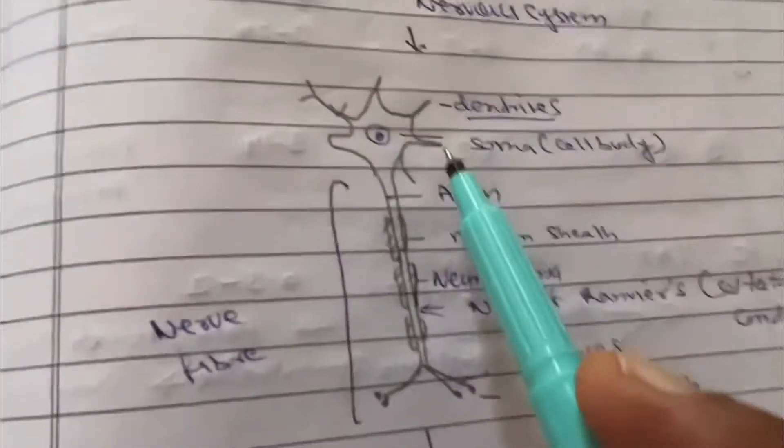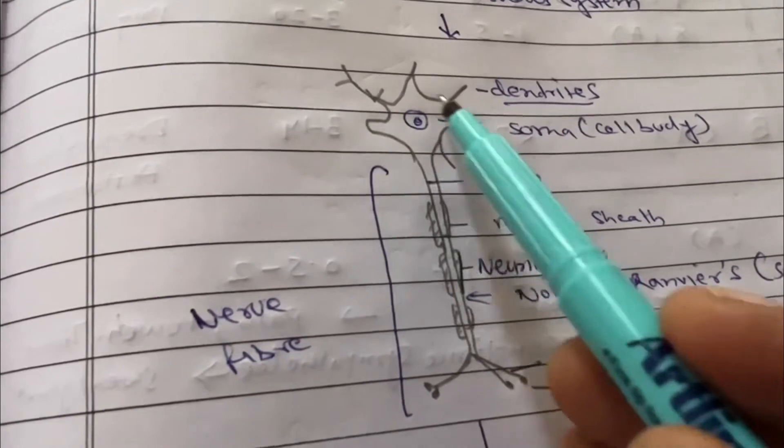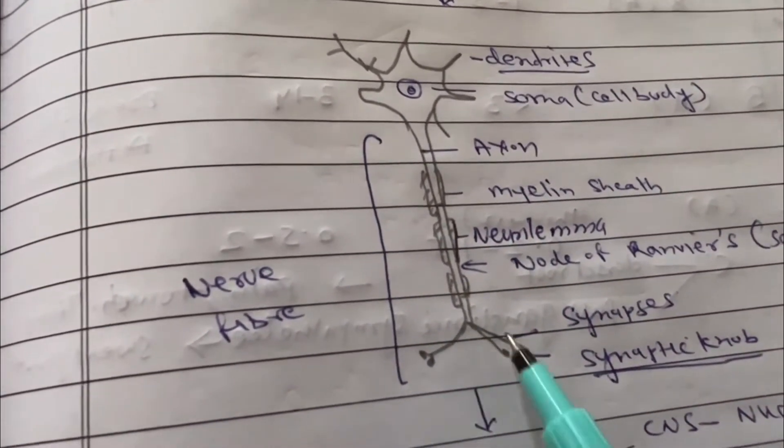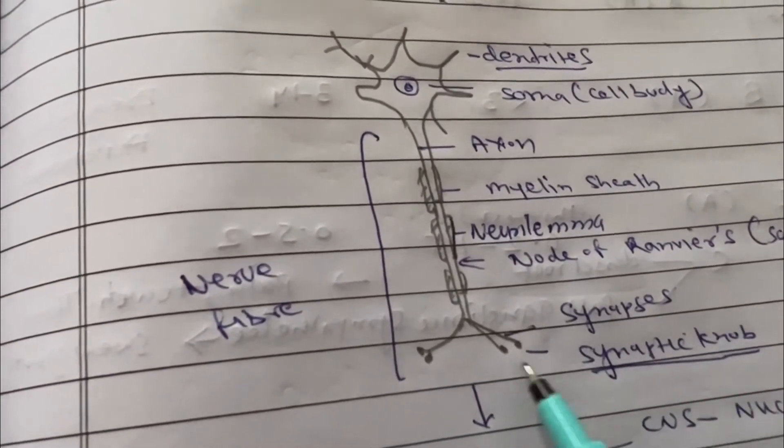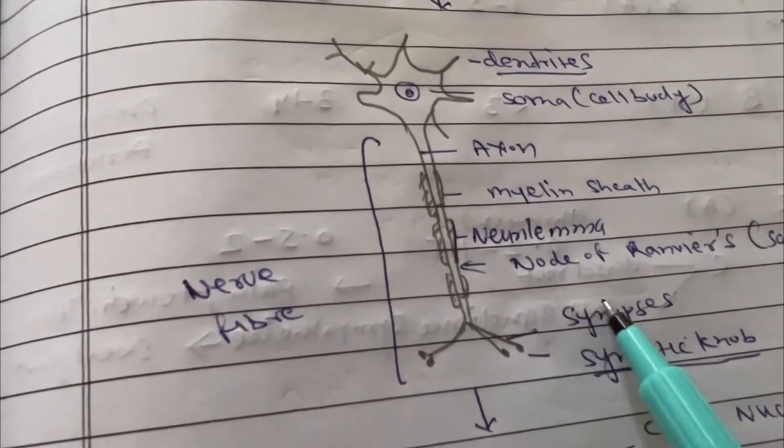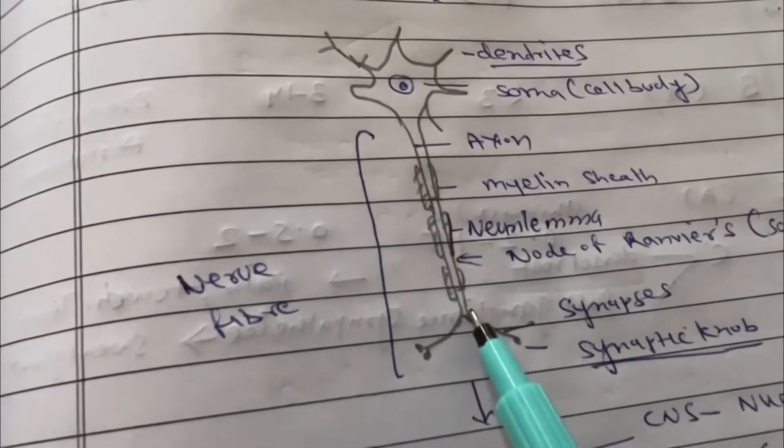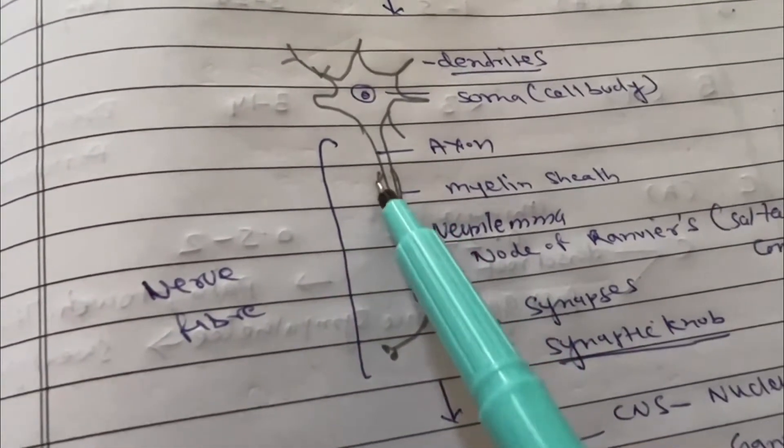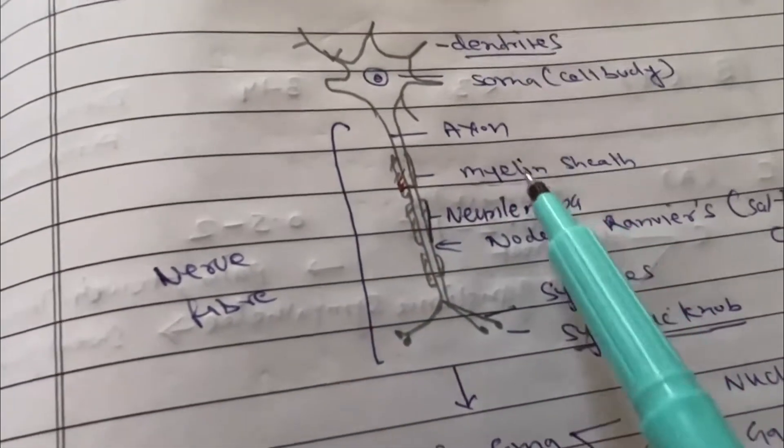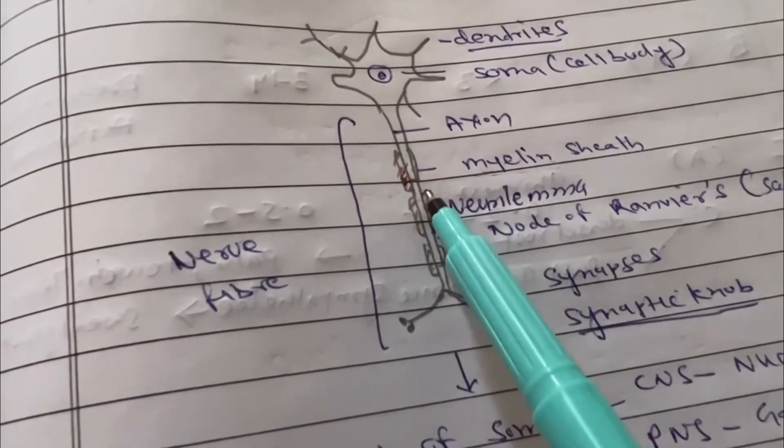This is a multipolar neuron showing these are the dendrites, this body is soma, and this long is axon which terminates in the synaptic node containing the transmitter acetylcholine. These are the synapses which make synapse with the dendrites, and this axon is covered with the myelin sheath. This myelin sheath is made by lipid and protein, and above that this one layer is called neurolemma, it's made by the Schwann cells.